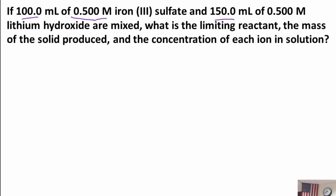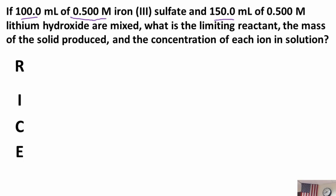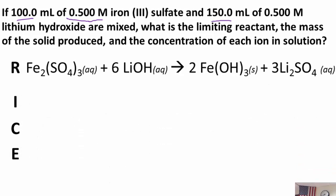So let's get going. Let's do a RICE table. Hopefully you remember: R is for reaction, I is for initial, C is for change, and E is for end or equilibrium, depending on the type of problem. First, let's write out the reaction — I did that ahead of time to save us a little bit of work.